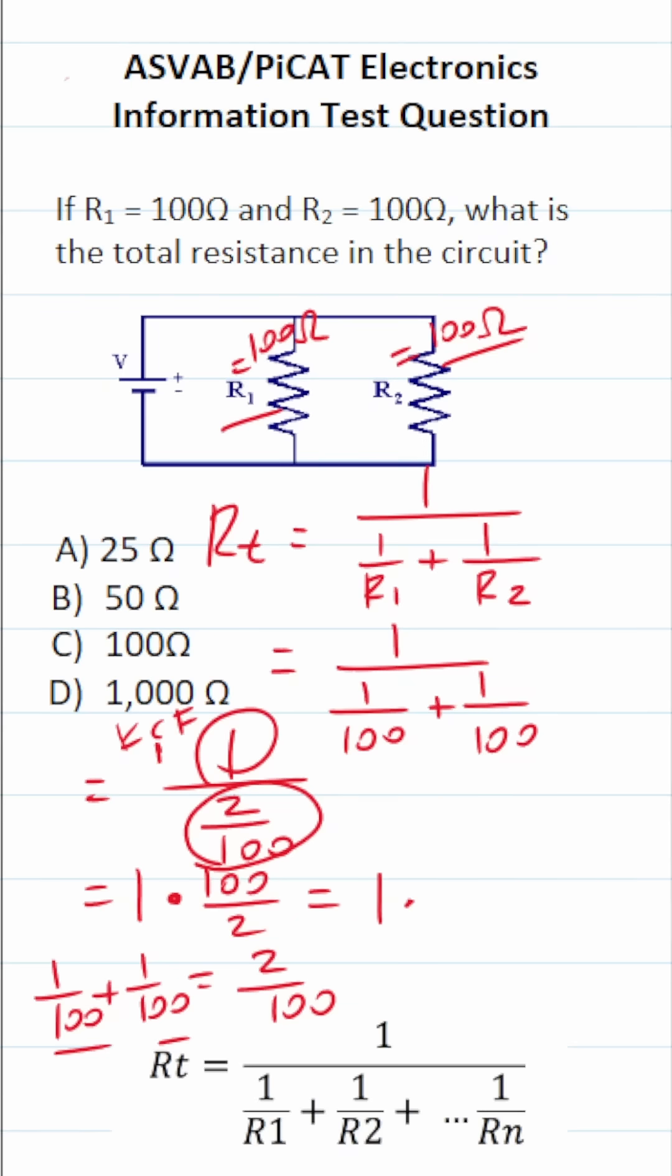This becomes 100 divided by 2 is 50. 1 times 50 is 50. So in other words, in this parallel circuit, there is a total of 50 ohms of resistance.